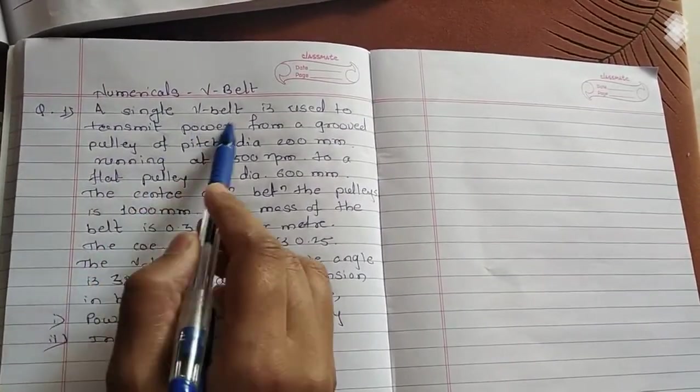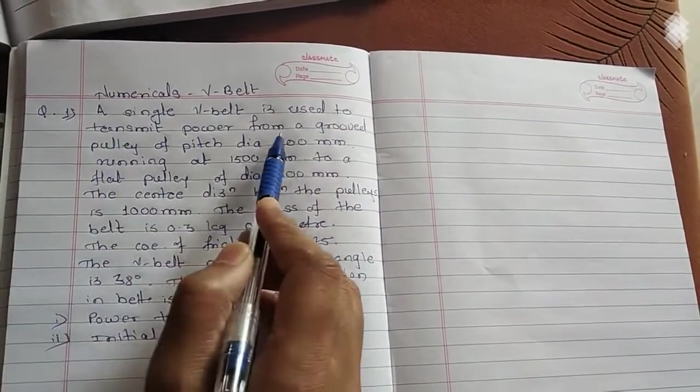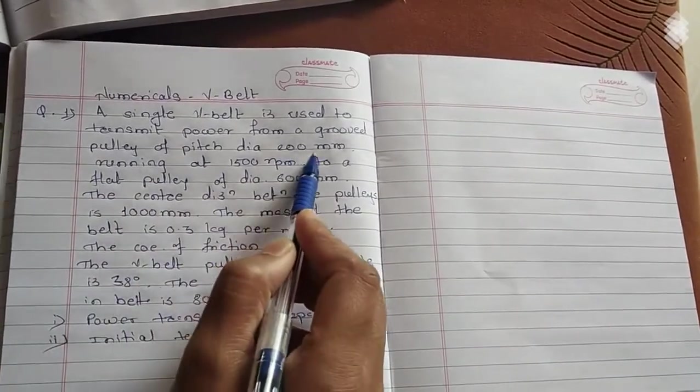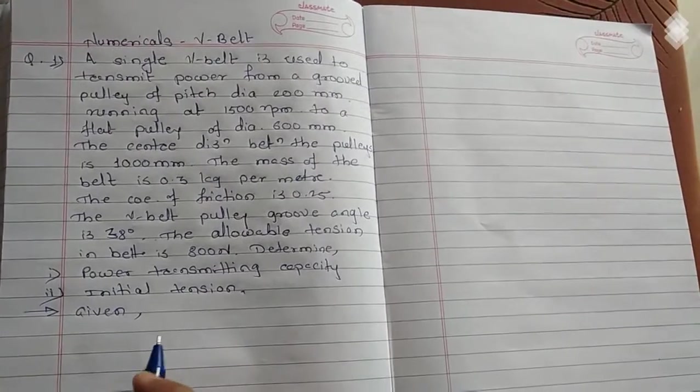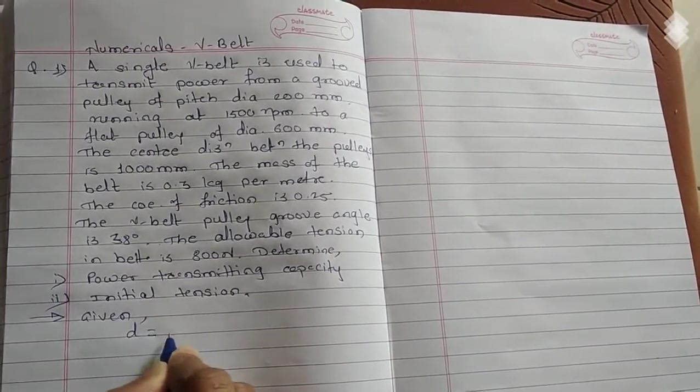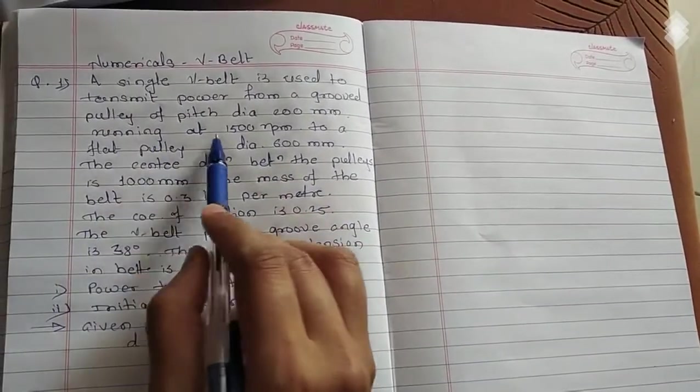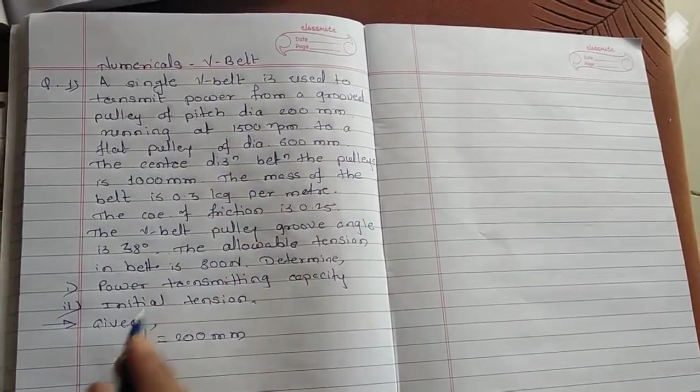A single V-belt is used to transmit power from a groove pulley of pitch diameter 200 mm. So let's set the given, that is small d equals 200 mm. Running at 1500 rpm, so small n is 1500 rpm.